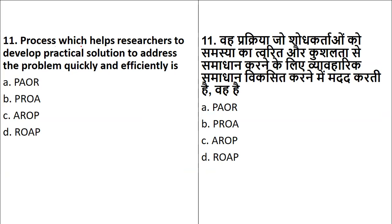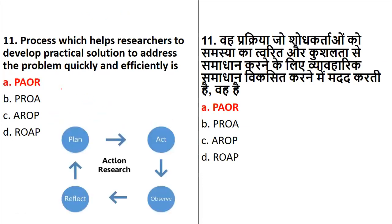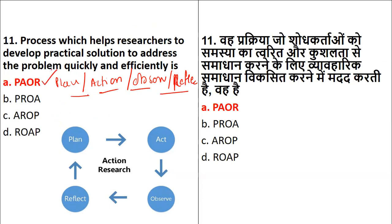Next question: the process which helps the researcher to develop a practical solution to address a problem quickly. This type of research is nothing but action research. It helps the researcher find a practical solution to the problem quickly and efficiently. The process of action research uses these acronyms: it starts with Planning, then comes Action, then Observation as a technique, and then Reflection as the result. So Plan, Act, Observe, Reflect — this is how we try to seek the problem as early and efficiently as possible.